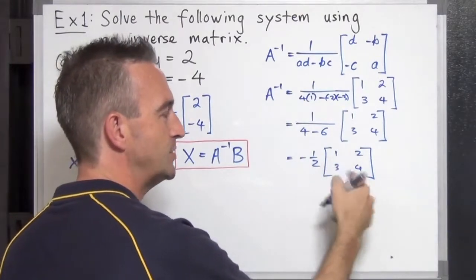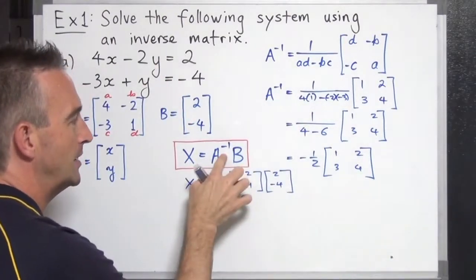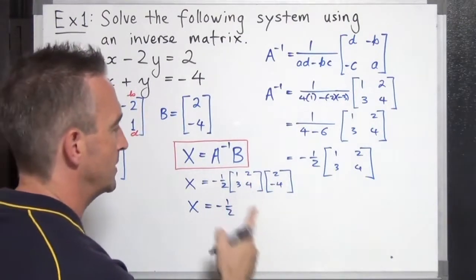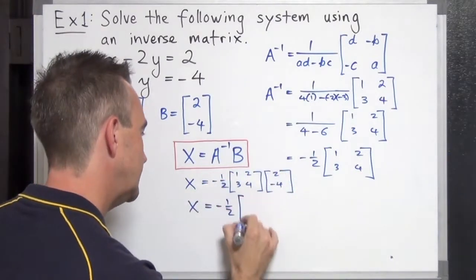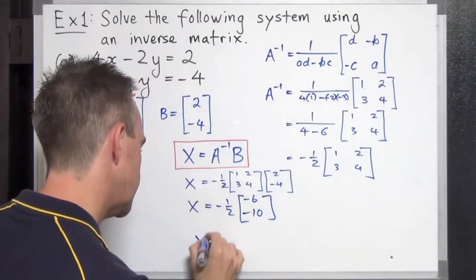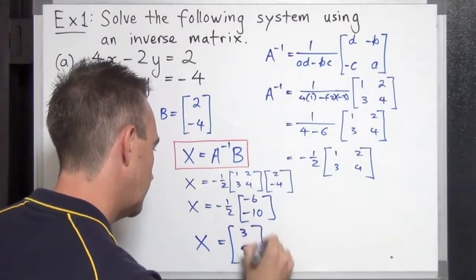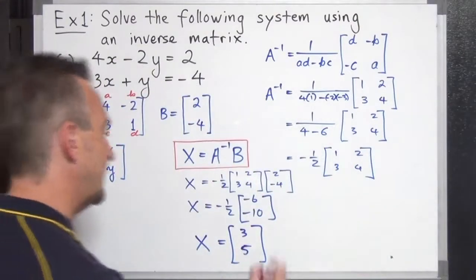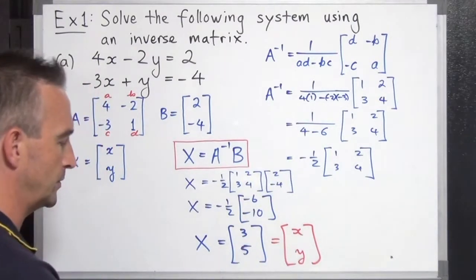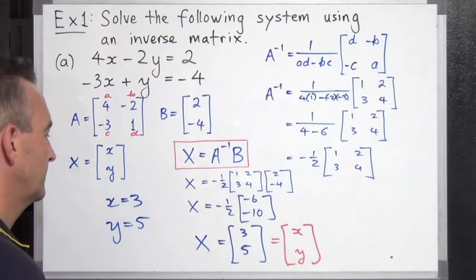We could multiply negative one half through all the entries, but since A inverse is going to get multiplied to B, it's easier to leave it like that. Let's take A inverse and B and put them into the formula. Negative one half times the matrix: 1 times 2 is 2, minus 8 — that's negative 6. Then 3 times 2 is 6, minus 16 — that's negative 10. So matrix X equals negative one half times negative 6 is positive 3, and negative one half times negative 10 is positive 5. Our solution: x equals 3 and y equals 5.